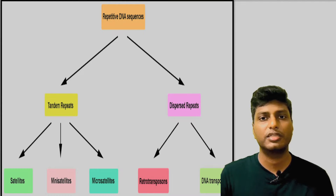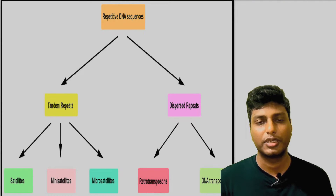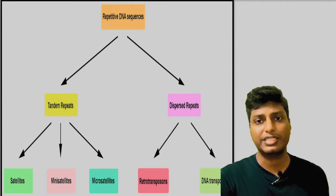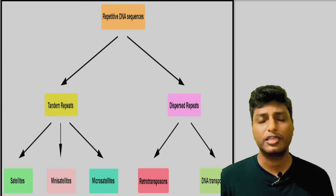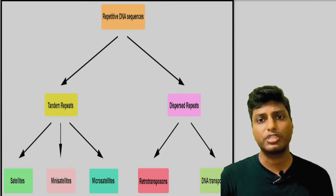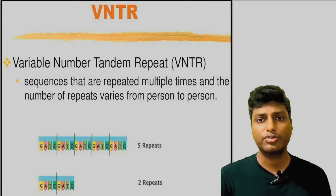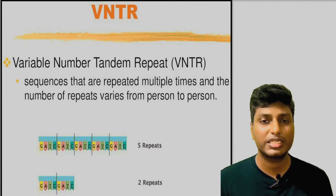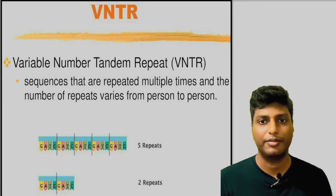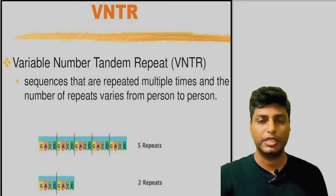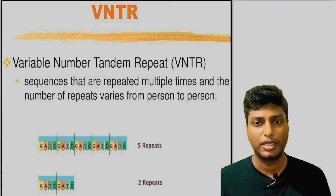Satellite DNAs are repetitive sequences that do not code for any protein. They are basically of two types: tandem repeats and dispersed repeats. Tandem repeats, based on their size, can be of three types: satellites, mini satellites, and microsatellites. Dispersed repeats are of two types: transposons and retrotransposons. The question asked us about VNTR, and VNTR is nothing but a type of mini satellite.